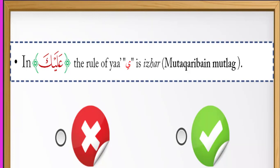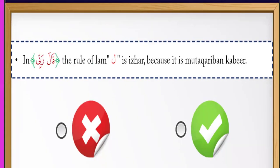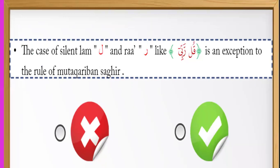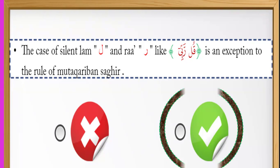Next: in عَلَيْكَ, the rule of لام is إظهار because it's متقاربين كبير. Next: لام and راء, like قُلْ رَبِّي, is an exception to the rule of متقاربين صغير. قُلْ رَبِّ — the first letter is silent, the second has حركة. It applies إدغام — yes, it is إدغام. It is an exception. True.